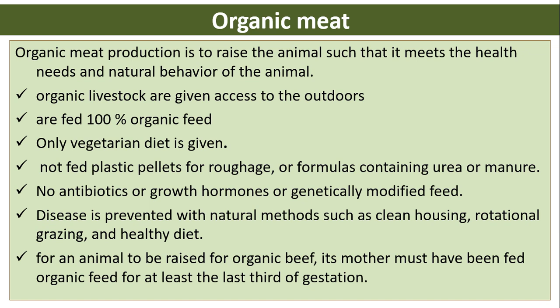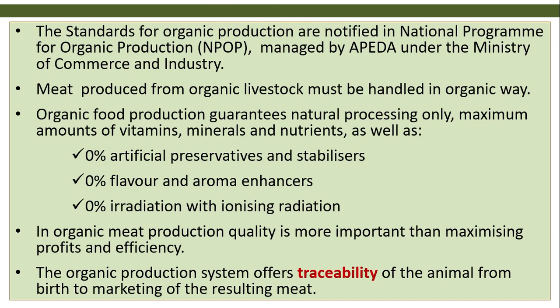Disease is prevented using natural methods such as clean housing, rotational grazing, and healthy diets. For an animal raised for organic beef, its mother must have been fed organic feed for at least the last third of gestation. Organic production standards are notified under the National Program for Organic Production (NPOP), managed by APEDA under the Ministry of Commerce and Industry. Organic food guarantees natural processing, maximum vitamins, minerals, and nutrients, with zero percent artificial preservatives, stabilizers, flavor and aroma enhancers, and zero percent ionizing irradiation.